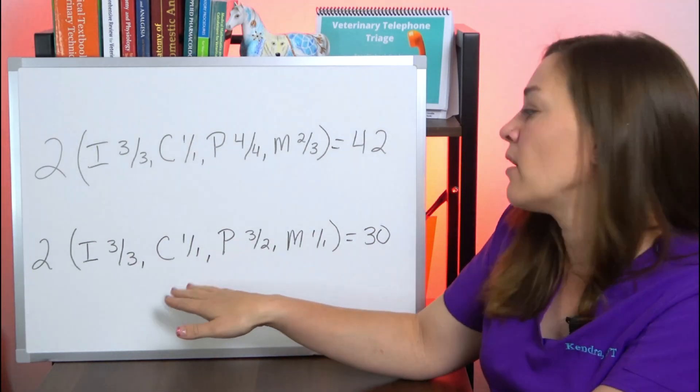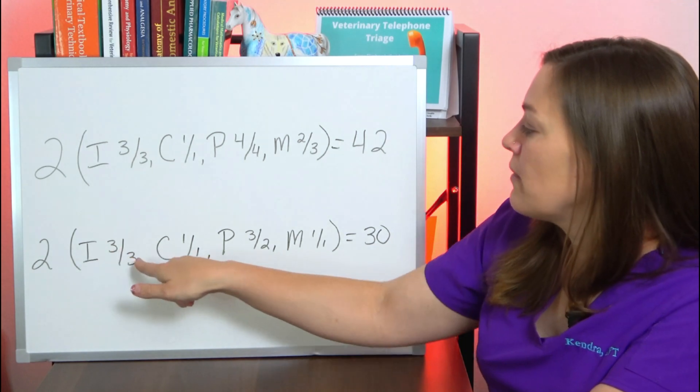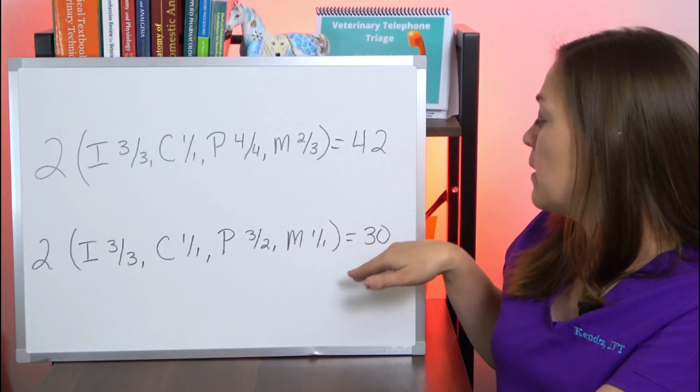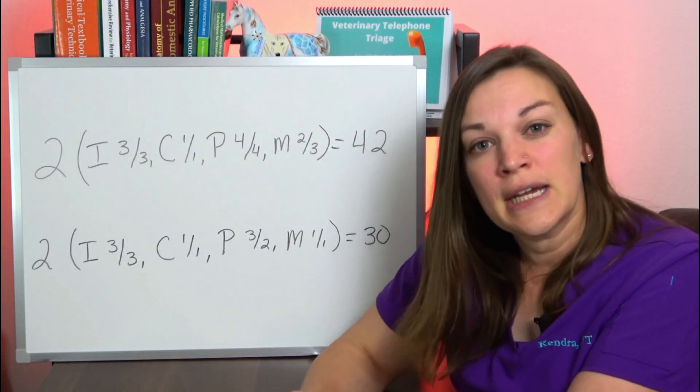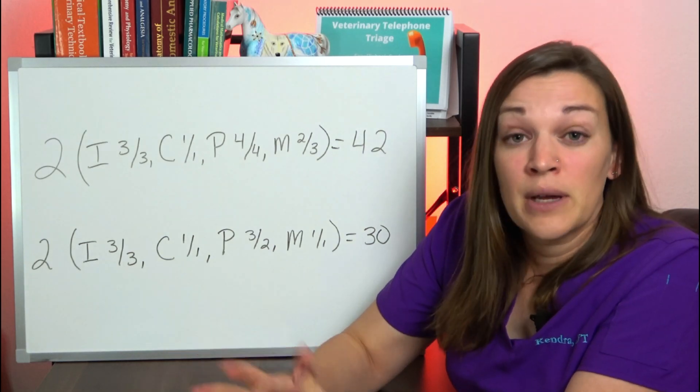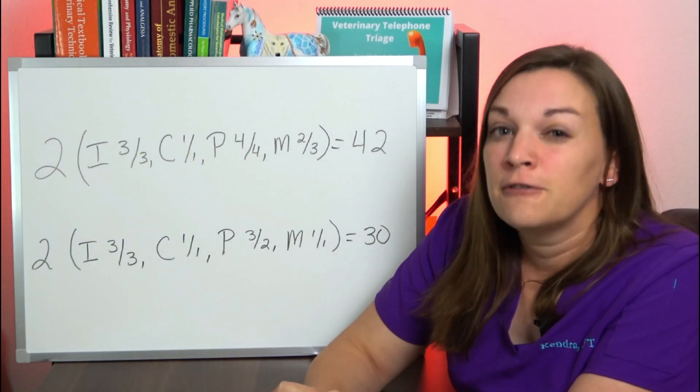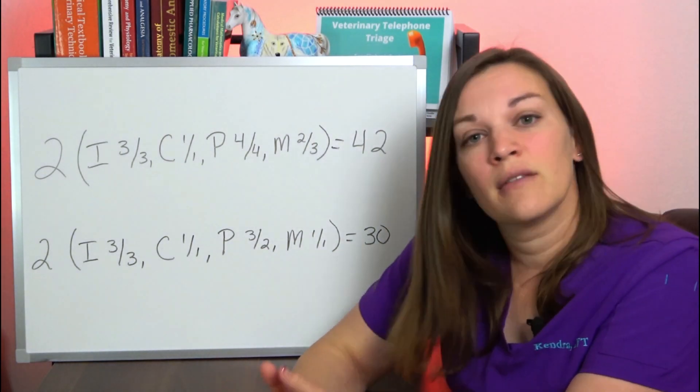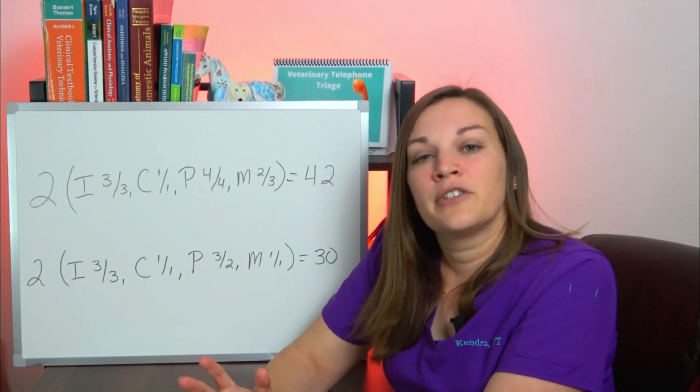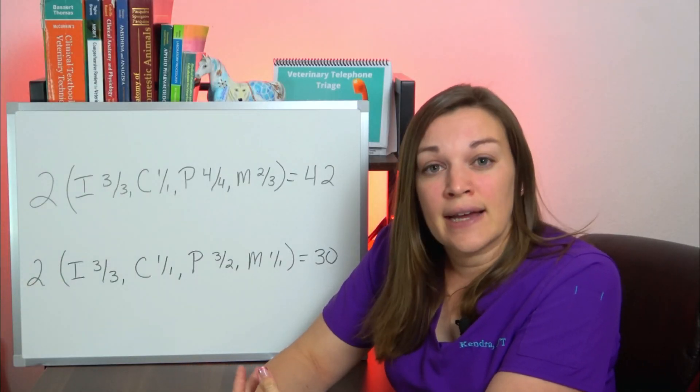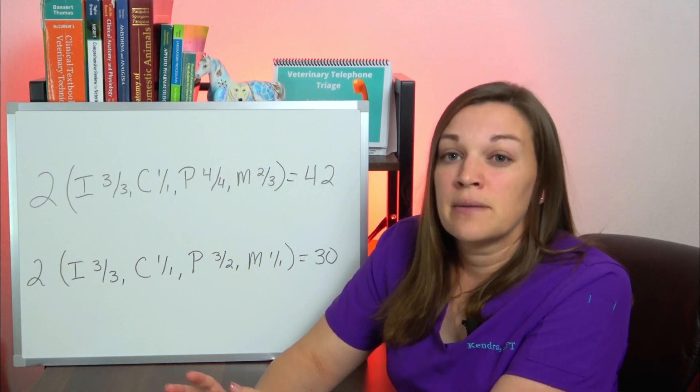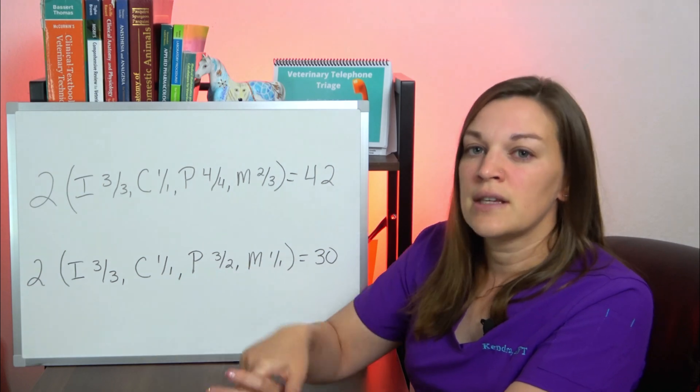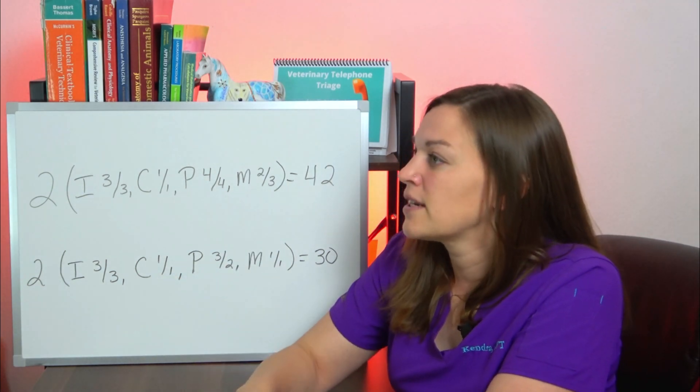Our second formula that we have up here, 2(I 3/3, C 1/1, P 3/2, M 1/1) equaling a total of 30 teeth, is a dental formula and the number of teeth that we'd see in a normal healthy adult feline. So right away you can see the significant difference here of 12 teeth between a canine and a feline. This is where your dental formula as well as your rule of 4 and 9 comes into play and how we will designate numbers to these teeth in a feline. So let's throw up our feline dental chart here.